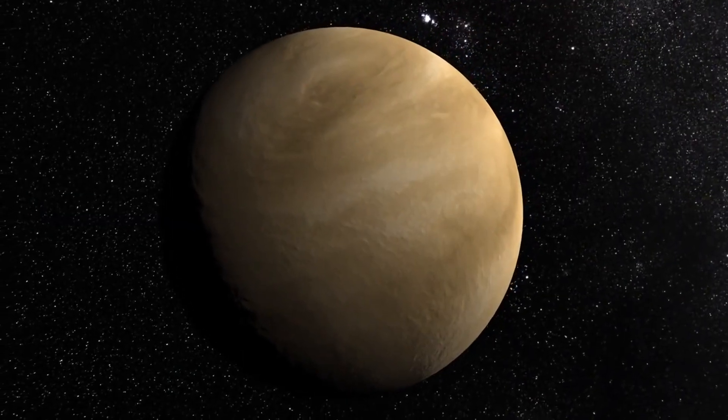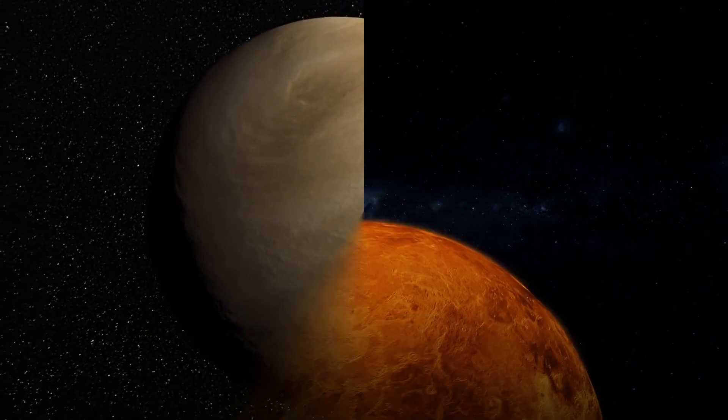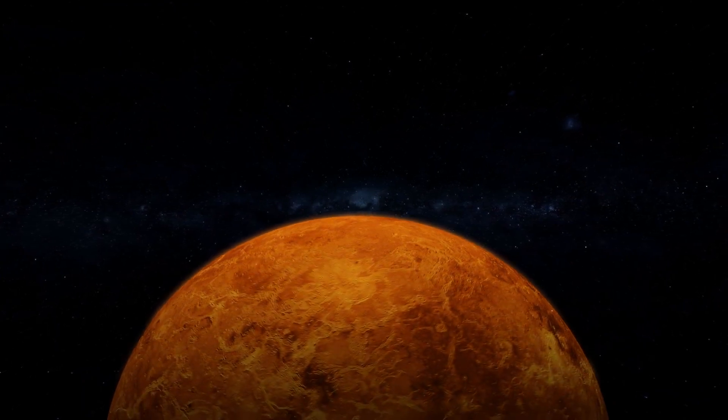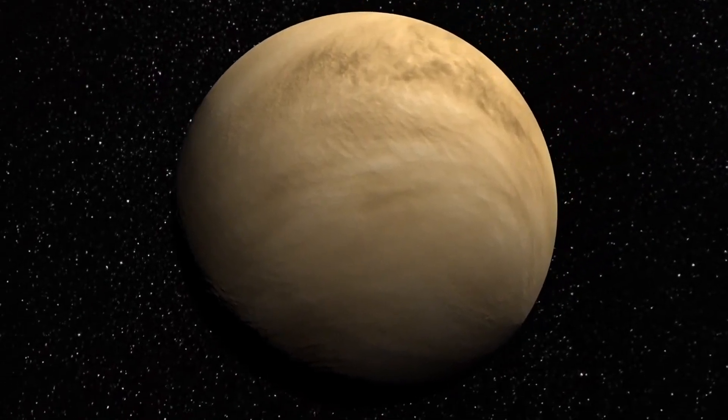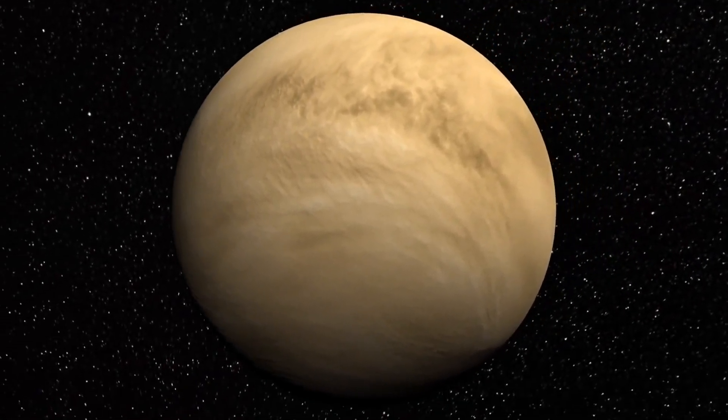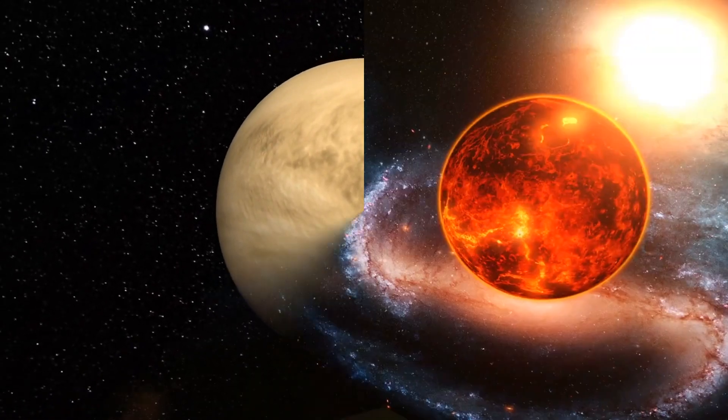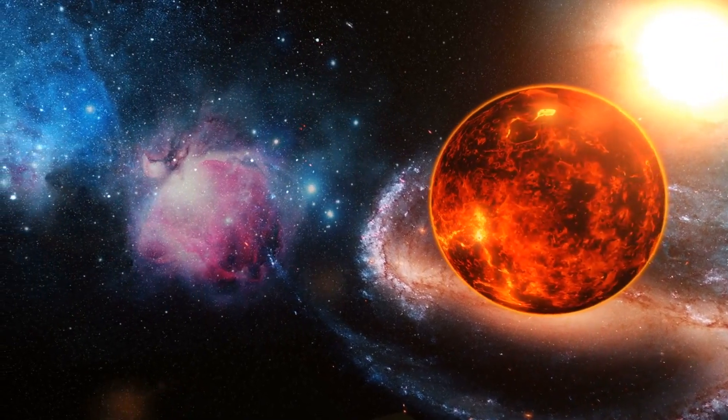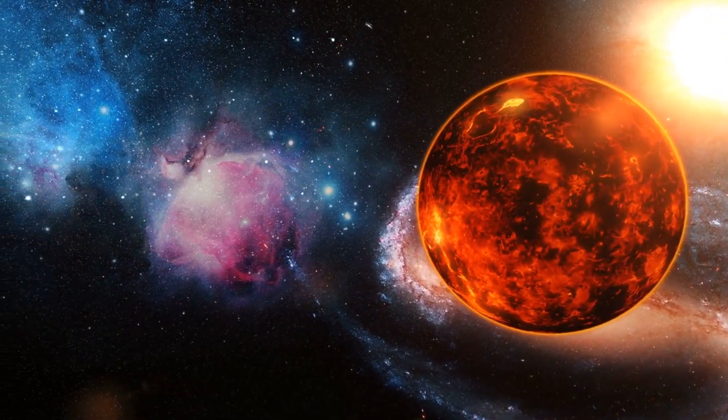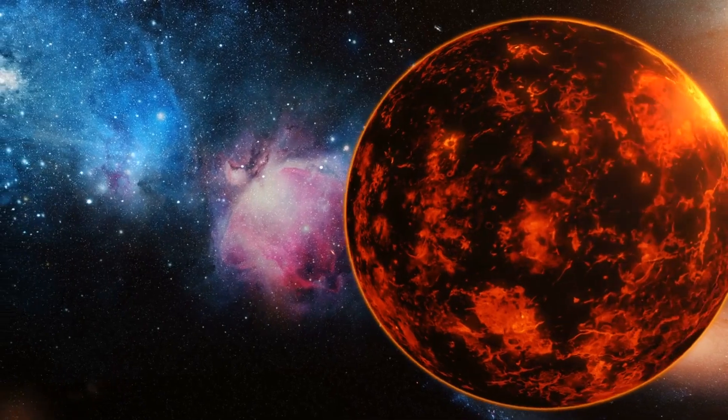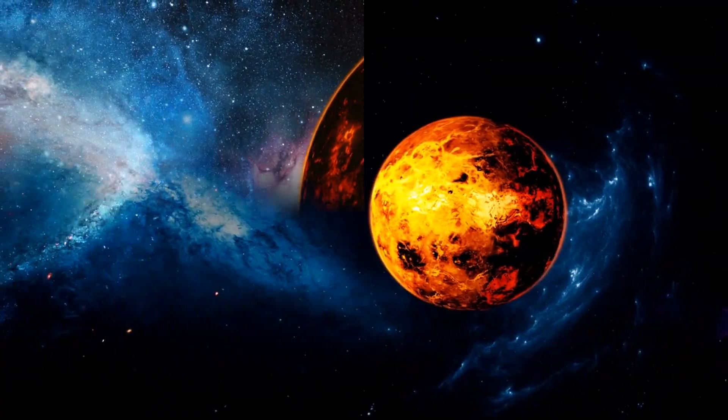Moreover, landing on Venus is no easy feat. The planet's surface is shrouded in mystery, with only limited data available from past missions. To ensure a successful landing, prototyped landers must be rigorously tested in simulated Venusian environments here on Earth. These simulations replicate the planet's harsh conditions, including its high atmospheric pressure and scorching temperatures, allowing researchers to fine-tune the designs and strategies for exploration.